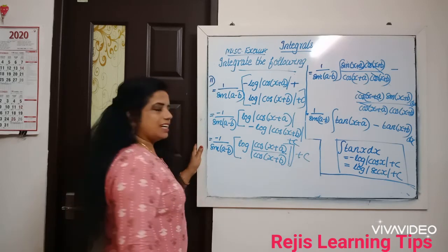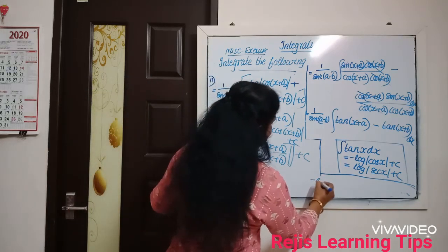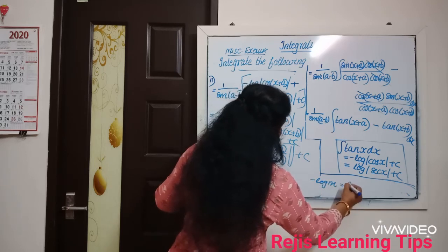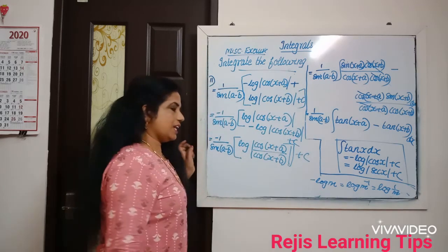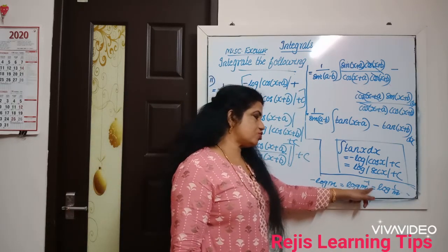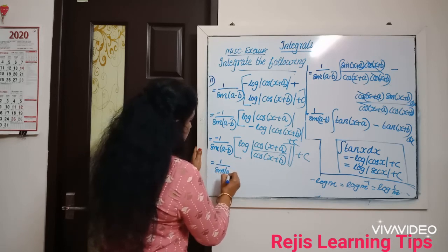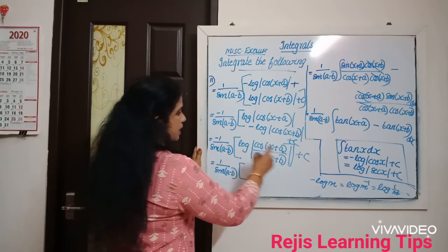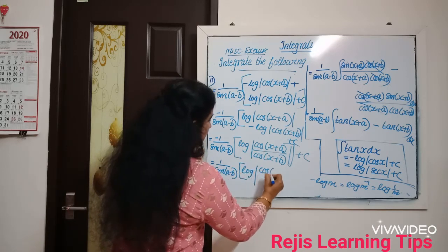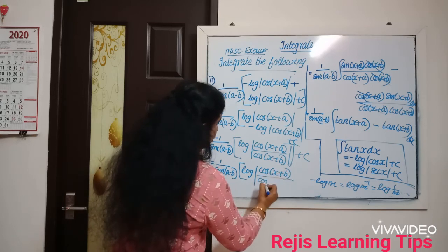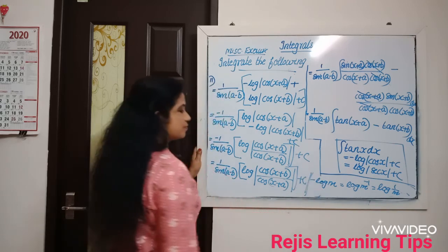Using log properties, log m minus log n equals log(m/n), so this becomes minus 1 by sin(a minus b) into log|cos(x+a) divided by cos(x+b)| plus c. And since minus log m equals log m raised to minus 1 equals log(1/m), we can also write this as 1 by sin(a minus b) into log|cos(x+b) divided by cos(x+a)| plus c.